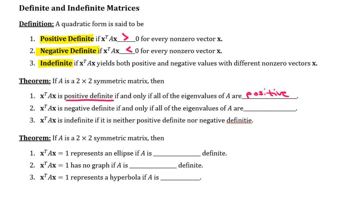So if you form lambda I minus A, take the determinant and set that equal to zero, and all the eigenvalues are positive, then the quadratic form is positive definite.